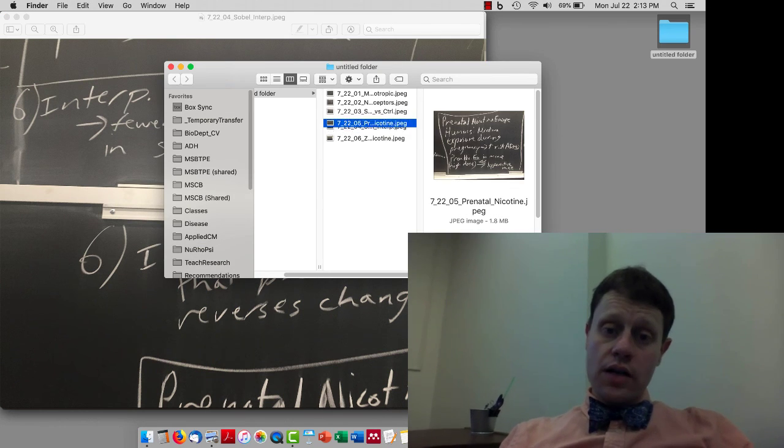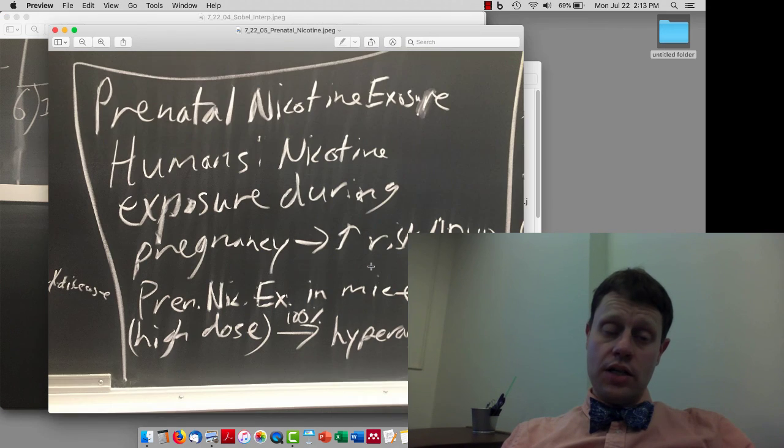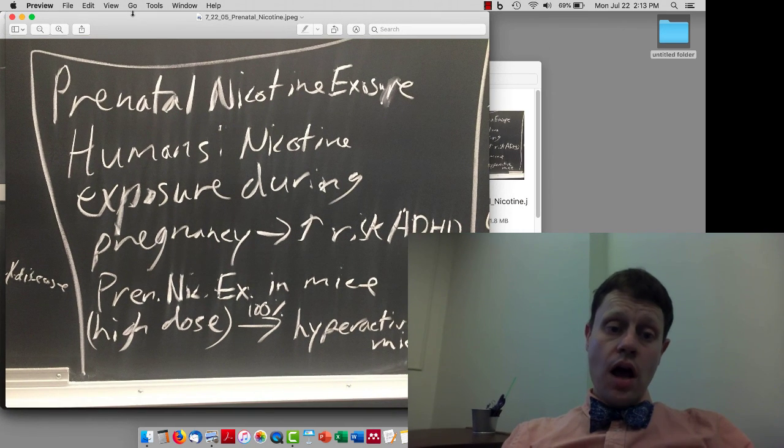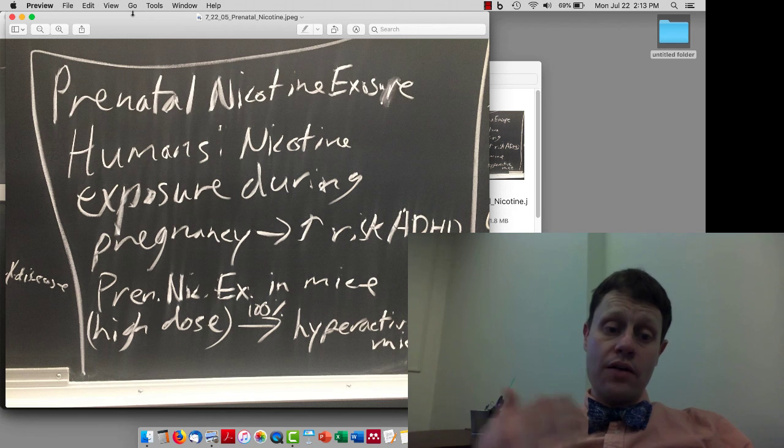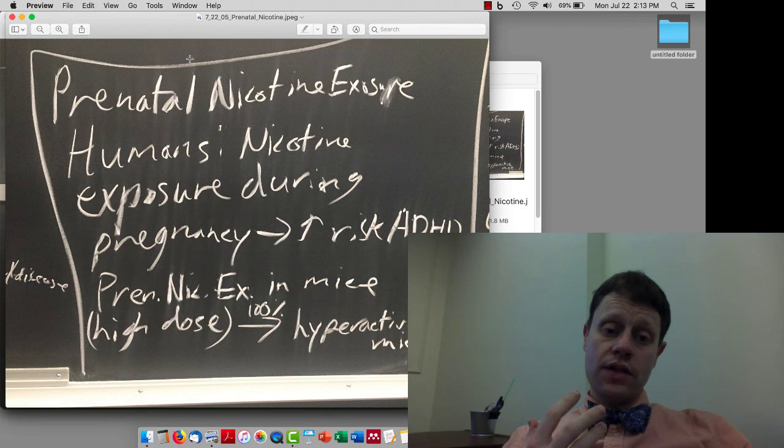We then talked about a mouse model for ADHD using prenatal nicotine exposure. What previous studies have found is that if pregnant mice are given a high dose of nicotine, then the babies come out very hyperactive.